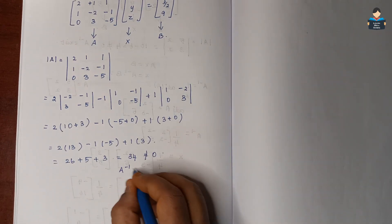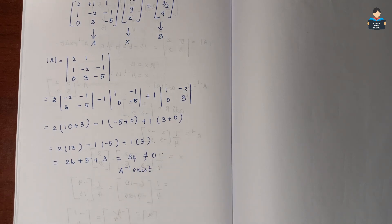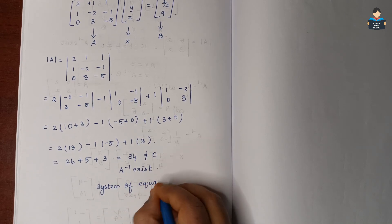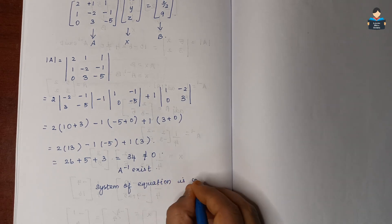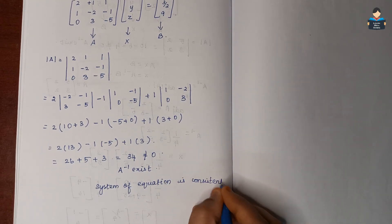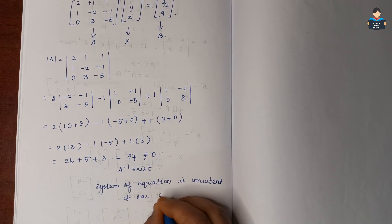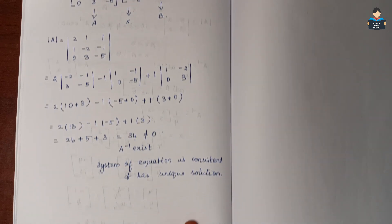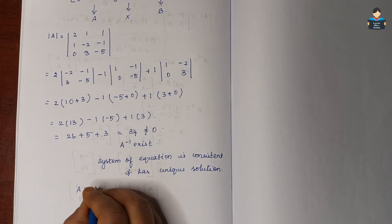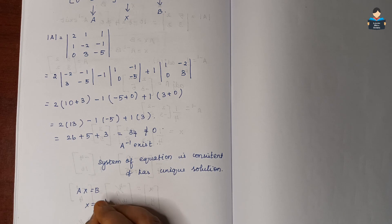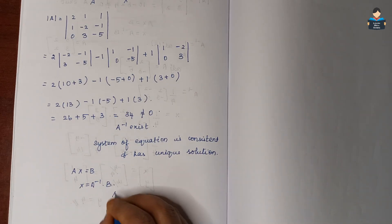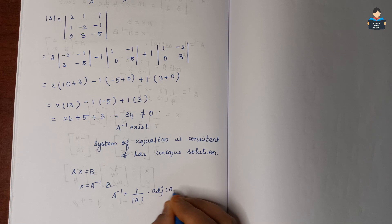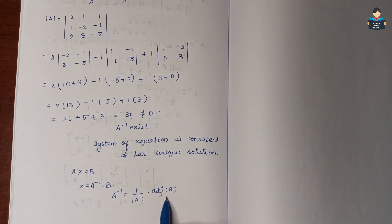Since A-inverse exists, the system of equations is consistent and has a unique solution. Using AX = B, we get X = A-inverse × B. A-inverse is found as 1 by det(A) into adjoint of A, which is 1/34 into adjoint of A.